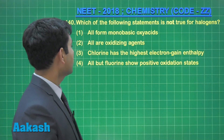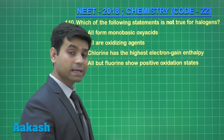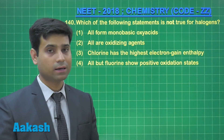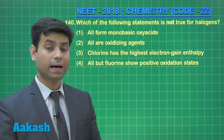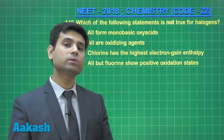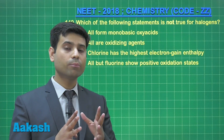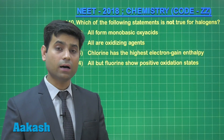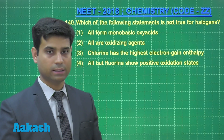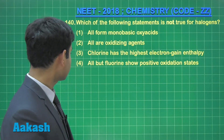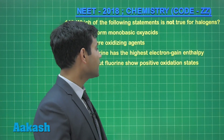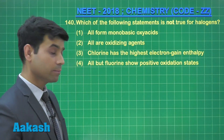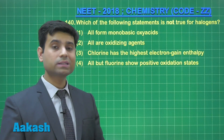If we talk about the oxidizing nature of halogens, it is a very well known concept that all halogens, being more electronegative, are good oxidizing agents.